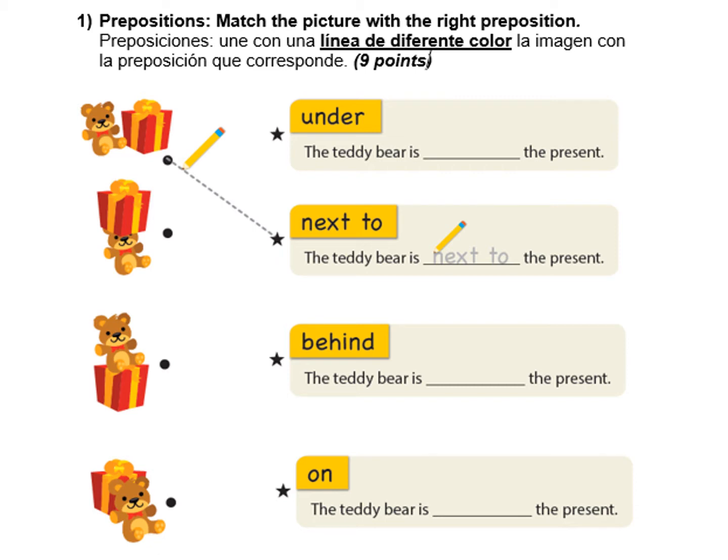¿Qué es lo que hay que hacer en el ítem número 1? Nosotros vamos a ver las preposiciones que, como se vio ya en la parte anterior del video, eran las diferentes preposiciones que nosotros podemos encontrar. Acá ustedes van a ver el dibujito y tienen que match the pictures with the right preposition.